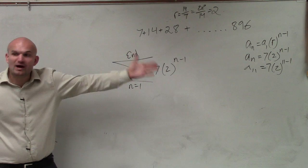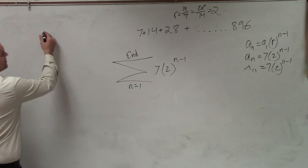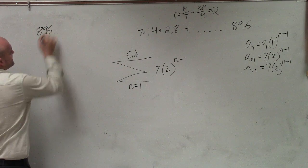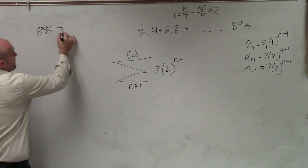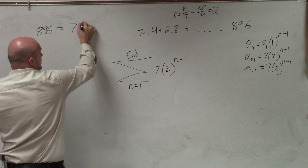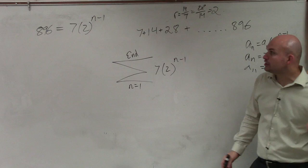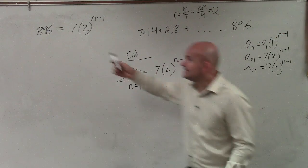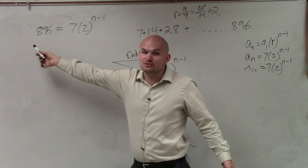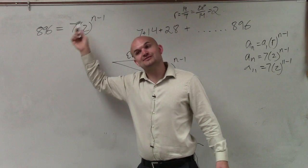So the problem that I have right now is I don't know what n is. I know what the value is, but I don't know for what value of n it is. So I can say that 896 is my last value. However, I do not know what value of n that is.